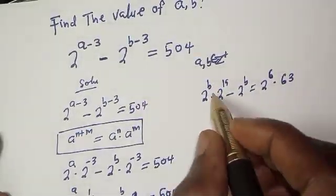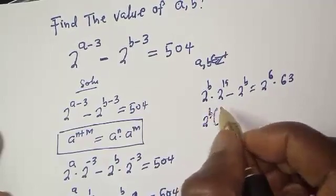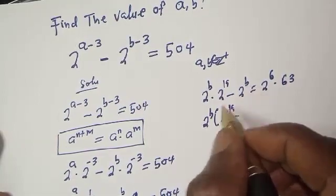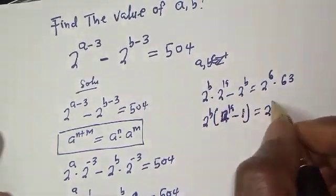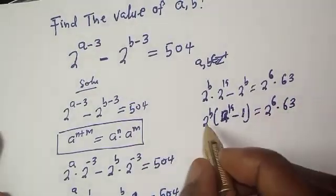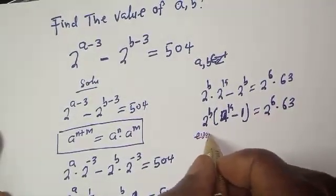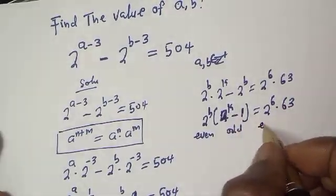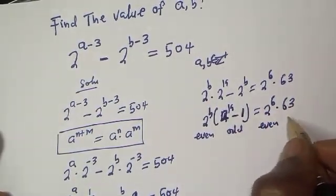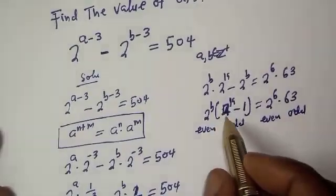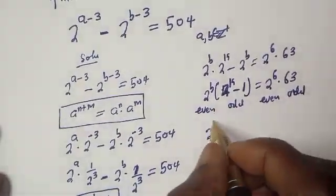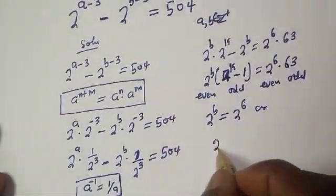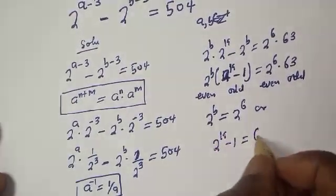From here, we see that 2 raised to power b is common. Factoring it out, we have 2 raised to power b times (2 raised to power k minus 1) equals 2 raised to power 6 multiplied by 63. Now, 2 raised to power b is even, 2 raised to power k minus 1 is odd, 2 raised to power 6 is even, and 63 is odd. So we can compare: 2 raised to power b equals 2 raised to power 6, and 2 raised to power k minus 1 equals 63.